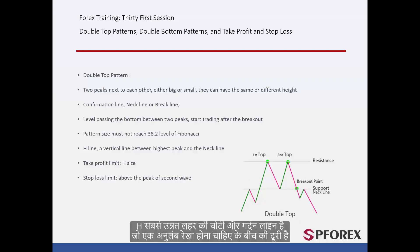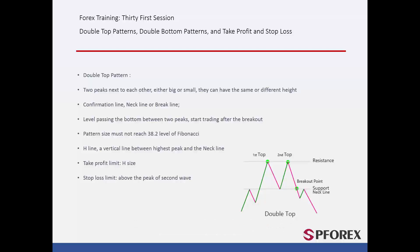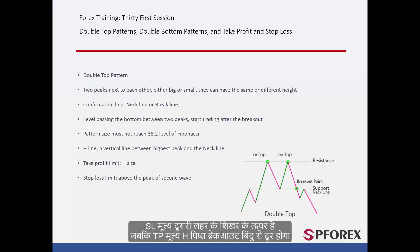H is the distance between the peak of the most elevated wave and the neckline, which must be a vertical line. TP price would be H pips away from the breakout point, while SL price is above the peak of the second wave.